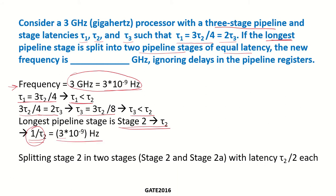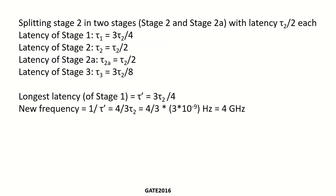This should be equal to 3×10⁻⁹ seconds. Now the longest stage, stage 2, has to be split into 2 stages — let us call them stage 2 and stage 2a — each with equal latency. That means each of these will have latency τ2/2. So the latency of stage 1 is τ1 = 3τ2/4.